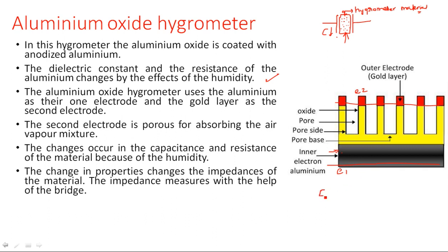Here we are changing the capacitance value, not resistance. When the resistive hygrometer was discussed, a Wheatstone bridge was used because resistance varies with humidity and resistance changes can be identified by a DC bridge. But for the capacitance hygrometer, a Wheatstone bridge is not sufficient because it is a DC bridge. We have to go for an AC bridge to identify capacitance changes.